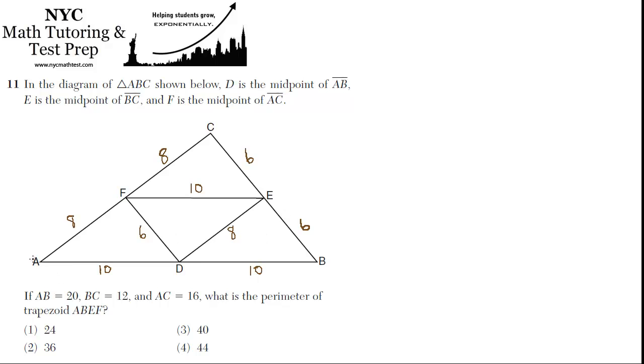Anyway, we want to know the perimeter of A, B, E, F. So we just add it up. 10 and 10 is 20, 6 is 26, and 10 is 36, and 8 is 44. So 4 is the best choice.